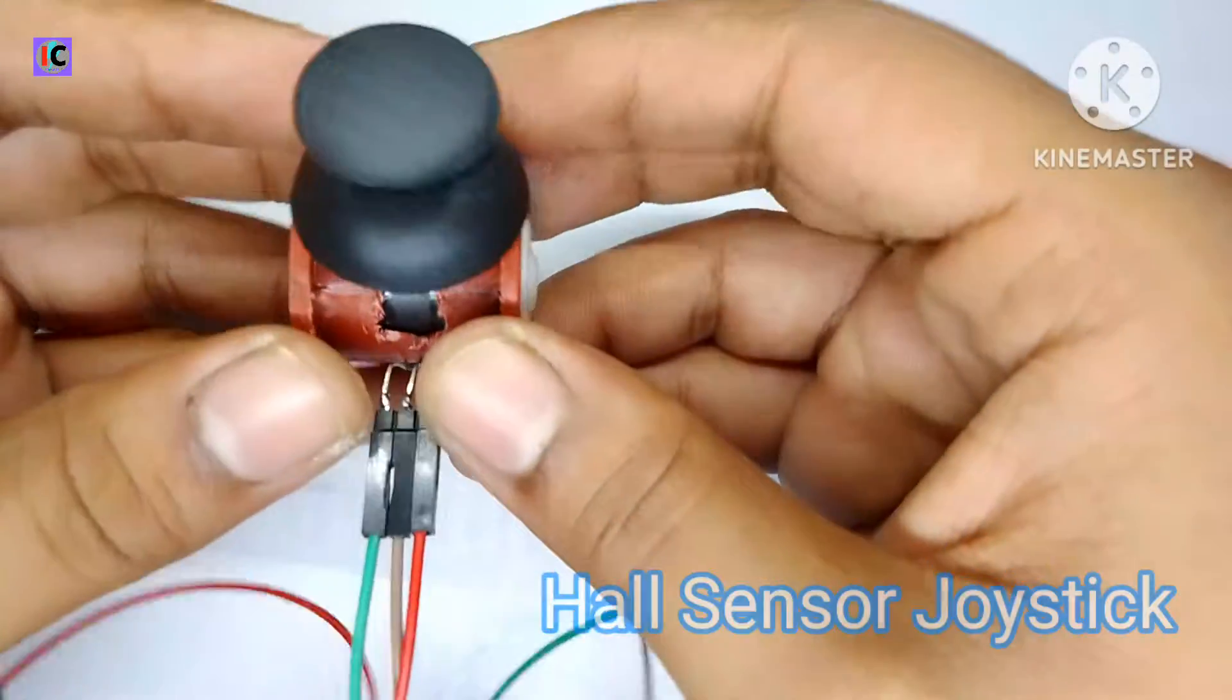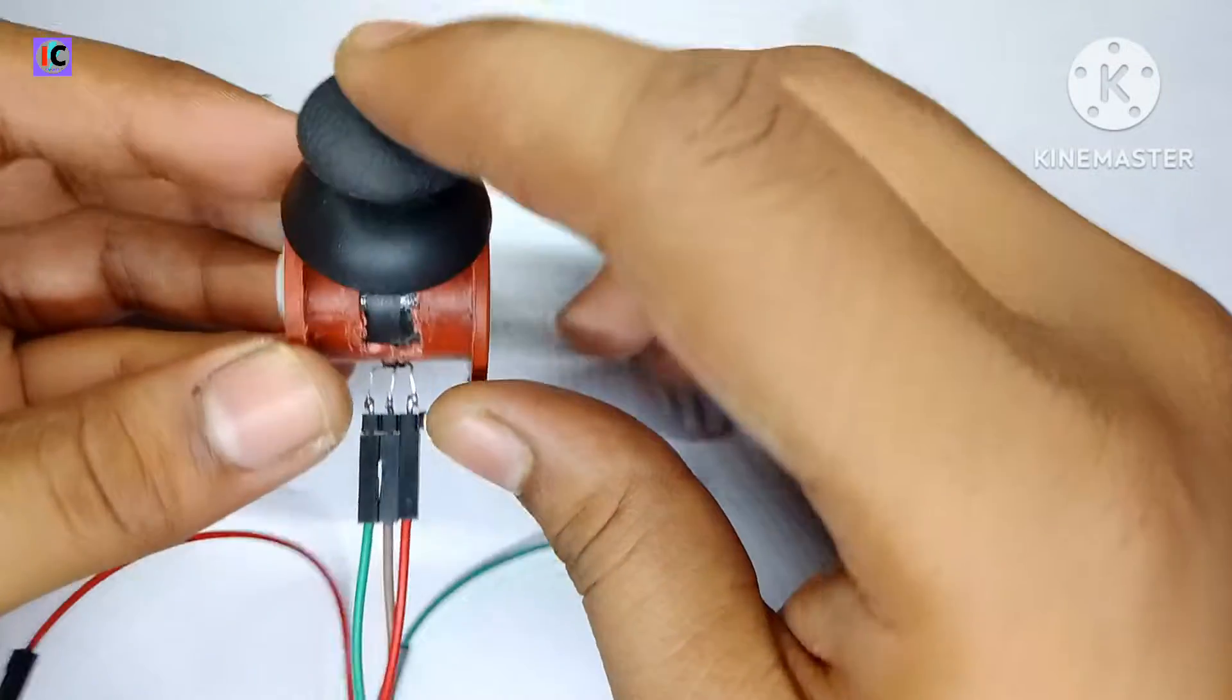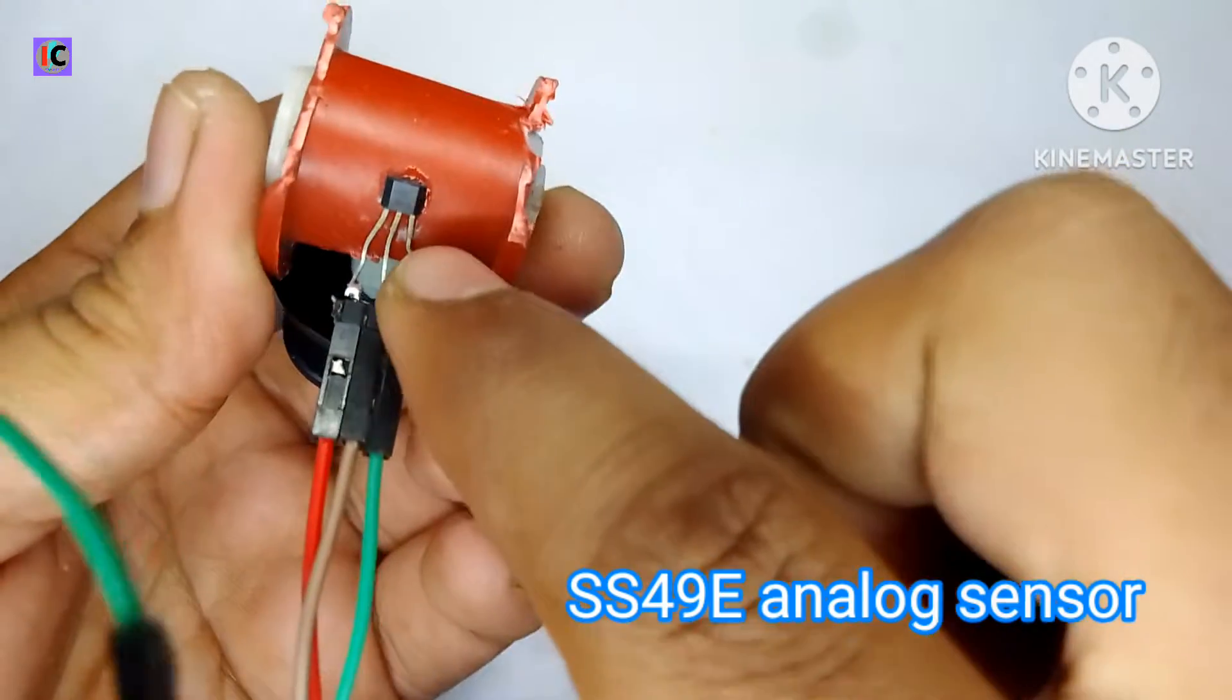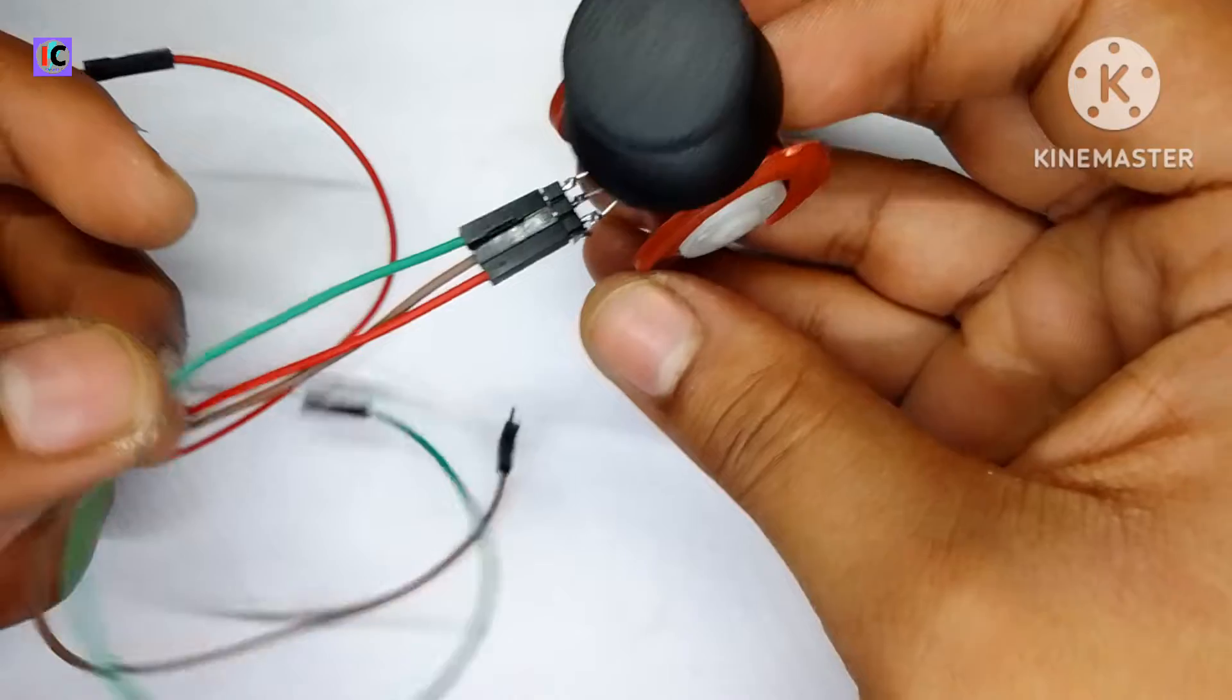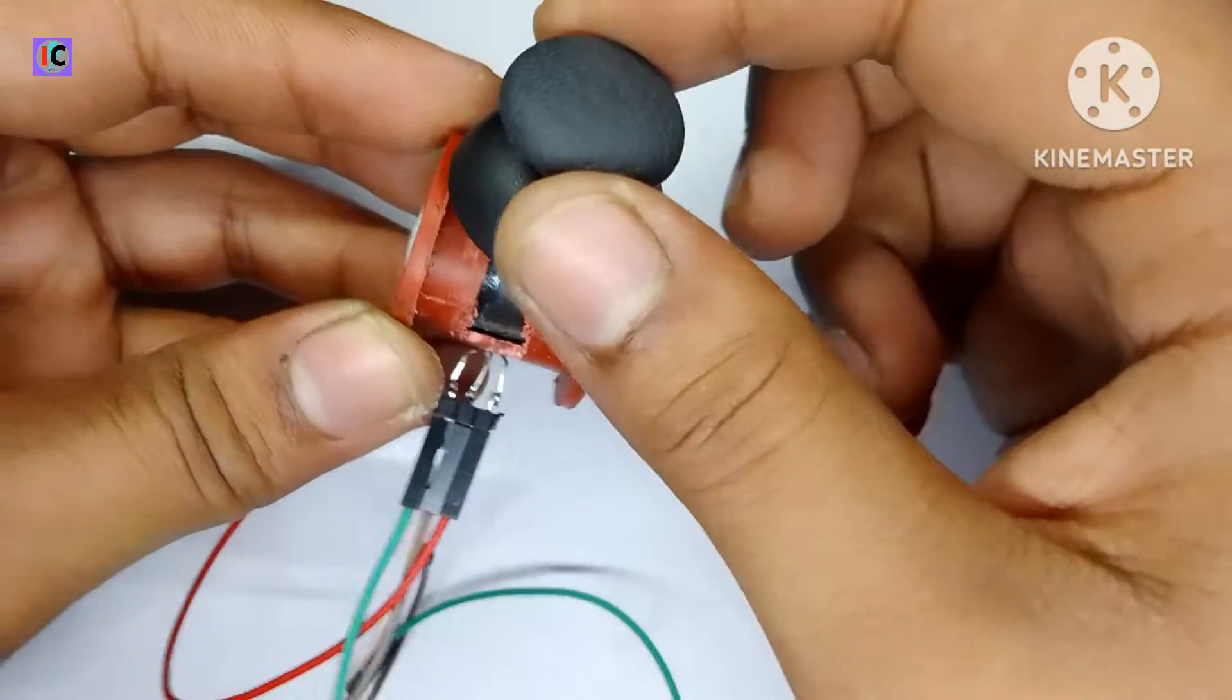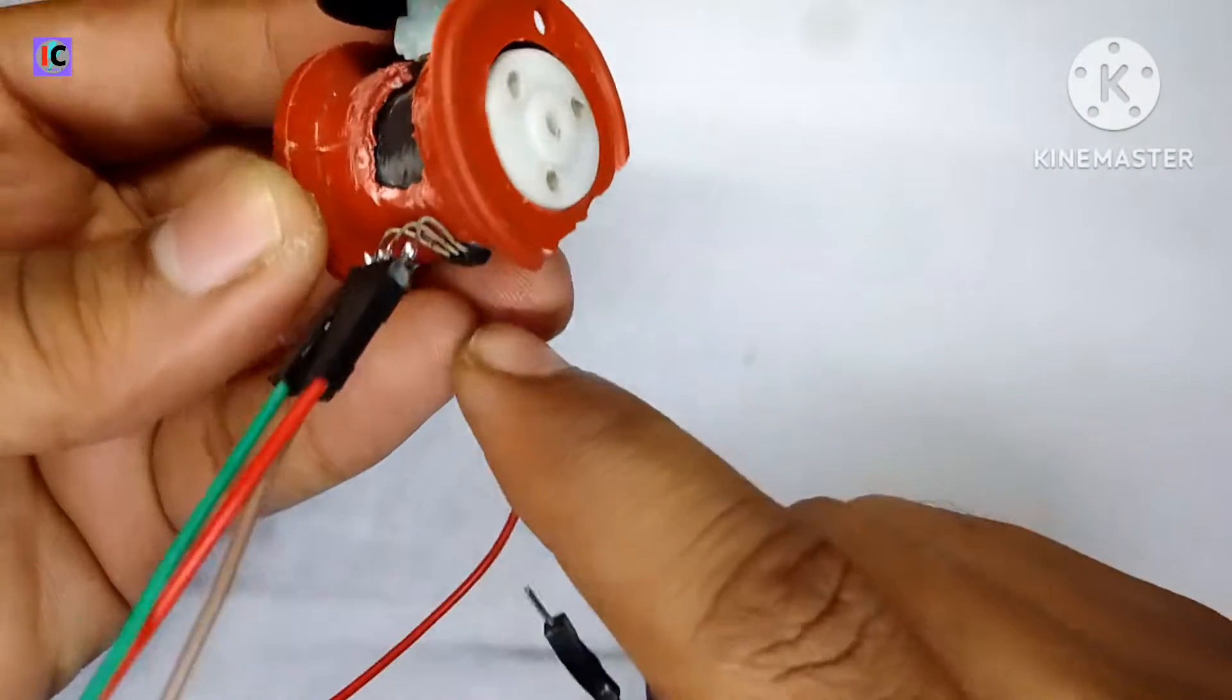Hello guys, welcome back to my channel. In this video we can see the working of this joystick which is based on hall sensor SS49E. It's an analog type hall sensor which gives the output voltage according to the magnetic strength. When I rotate the stick like this, the magnetic field changes on the hall sensor and the output of this sensor varies.